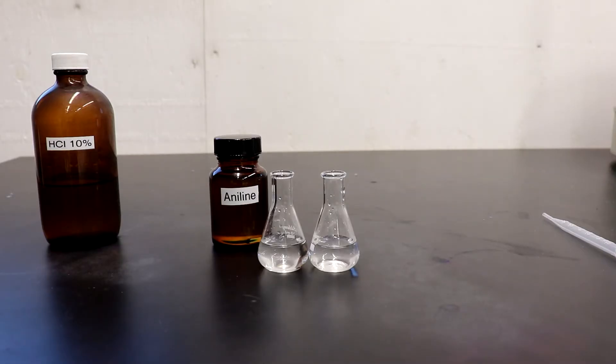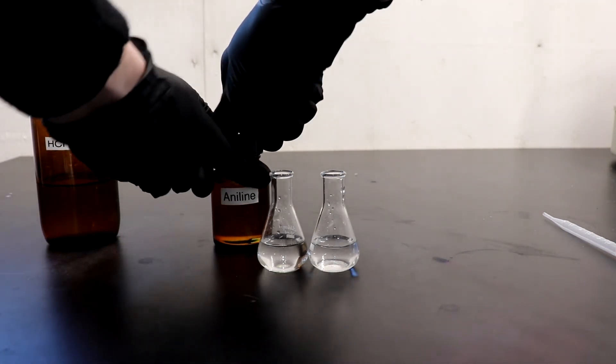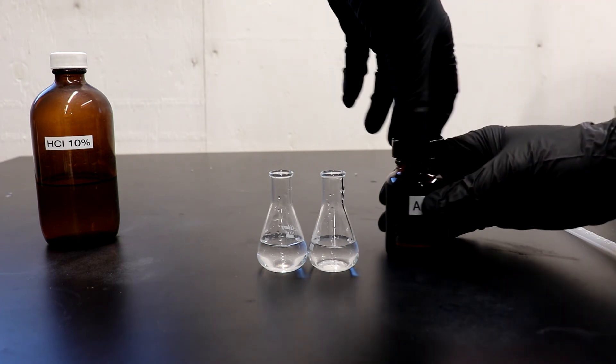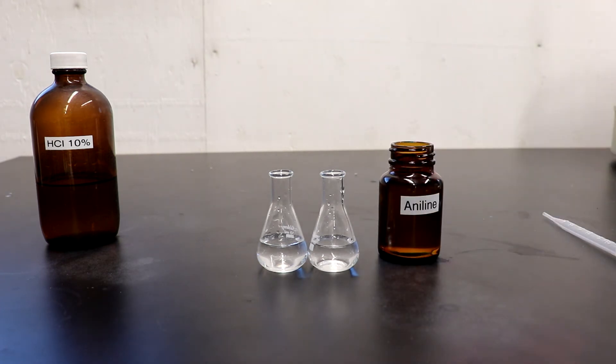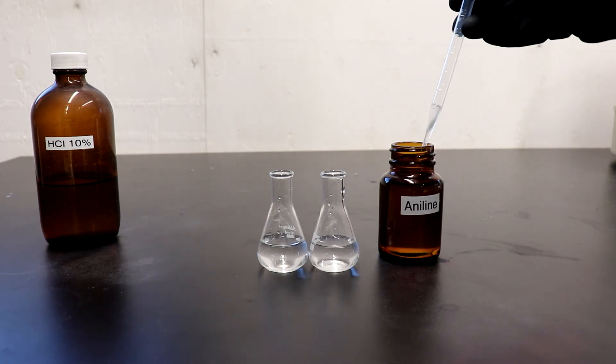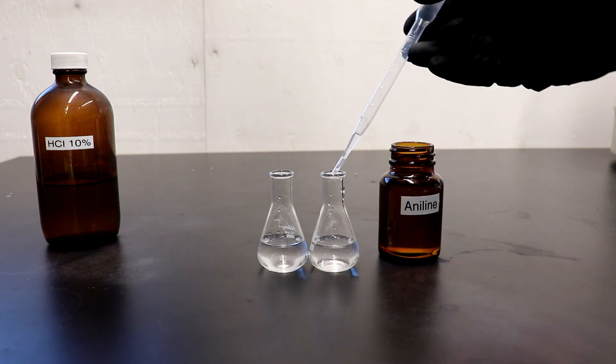So how can we be sure that this product is in fact aniline? Well, first of all, its boiling point was in fact the correct boiling point for aniline. And its freezing point, its melting point, is also correct, being at negative 10 degrees Celsius. But we can also do some chemical tests.